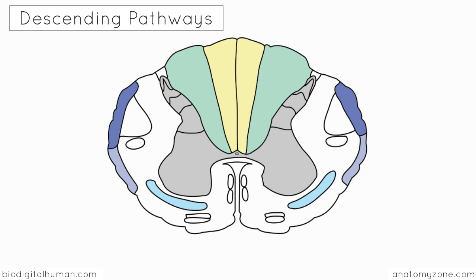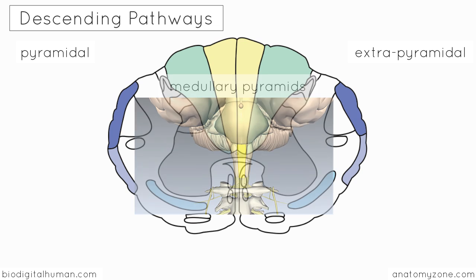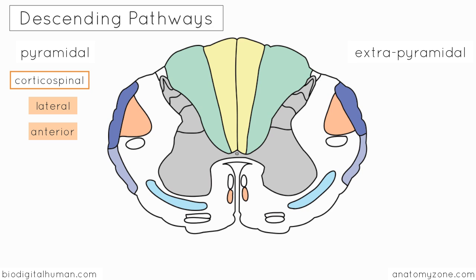It's useful to think of these descending tracts as pyramidal or extrapyramidal. Pyramidal refers to tracts which pass through the medullary pyramids. The pyramidal tracts are the corticospinal tracts — you've got the lateral corticospinal tracts and the anterior corticospinal tracts, highlighted in orange. The corticospinal tracts convey voluntary, skilled movements originating from the motor cortices of the brain. The lateral corticospinal tracts carry motor information destined for the limbs and are important in skilled voluntary movement, while the ventral corticospinal tract carries axial motor information — the axial muscles being those central muscles which aren't limb muscles.